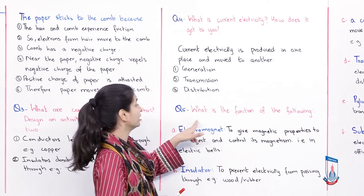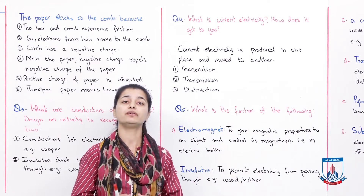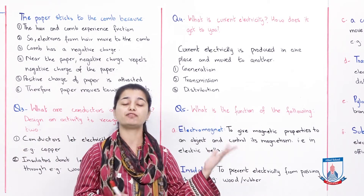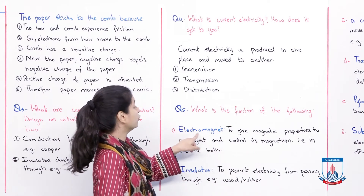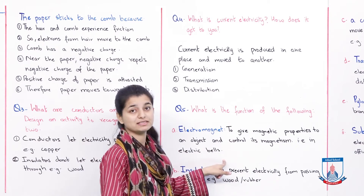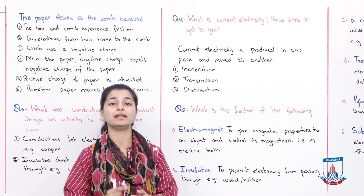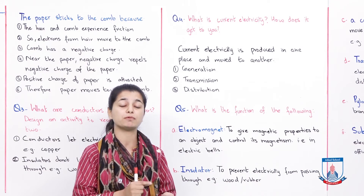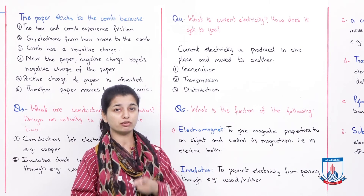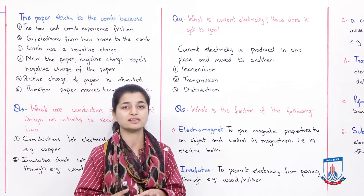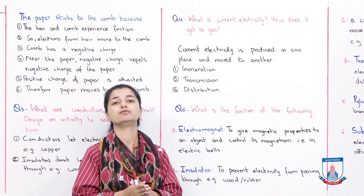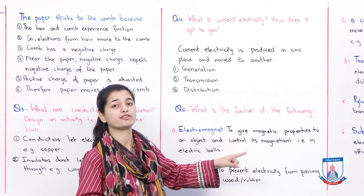Now let's go to question number 5: What is the function of the following? First part — what is the use of an electromagnet? To give magnetic properties to an object and control its magnetism, for example in electric bells. An object that normally has no magnetic properties becomes a magnet when you send electricity through it. You can also control when it is a magnet and when it is not. So when you ring an electric bell, the electromagnet works because the current flows and produces a sound.